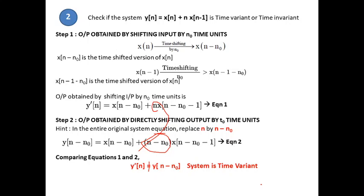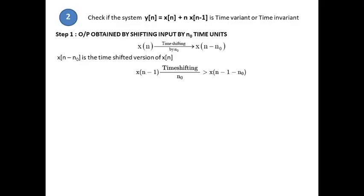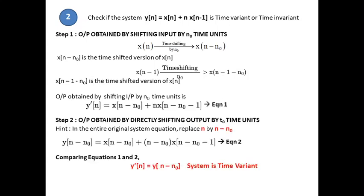Both equations are not equal, so the system is time variant. The key takeaway is: whenever in any system equation the given input is multiplied by a time variable — n in discrete time or t in continuous time — that system will be time variant.